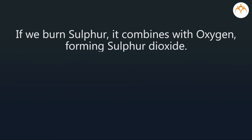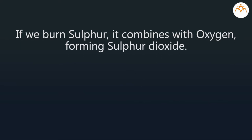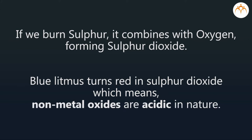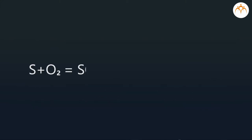If we burn sulphur, it combines with oxygen forming sulphur dioxide: S + O₂ gives SO₂. Blue litmus turns red in sulphur dioxide, which means non-metal oxides are acidic in nature.